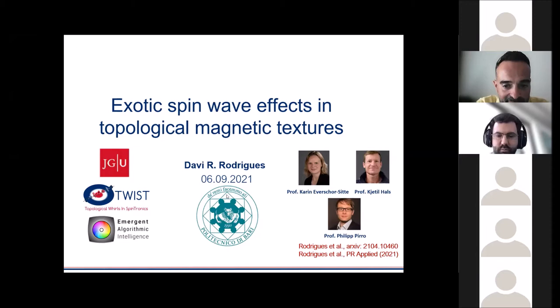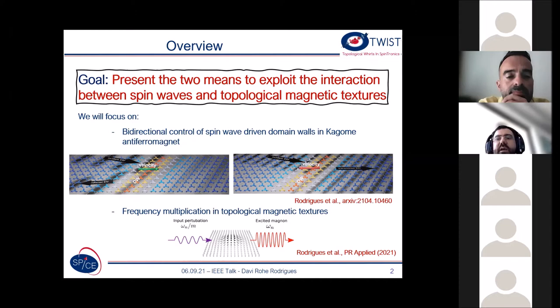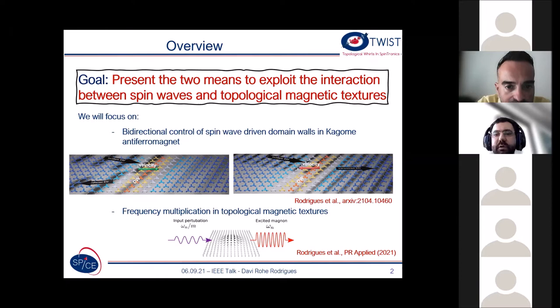The overview of my talk is the following. The main message is that I want to present two means to exploit the interaction between spin waves and topological magnetic features. More specifically, I want to show that in non-collinear antiferromagnets, such as Kagome antiferromagnets, it is possible to move domain walls and control the direction of motion by controlling the frequency of the incident spin waves. I would also like to mention frequency multiplication in topological magnetic textures, which may have quite interesting applications for future spintronic devices.